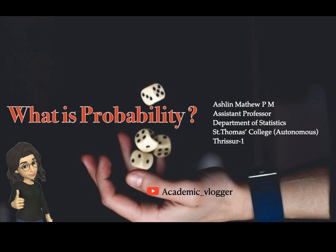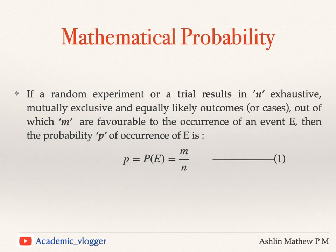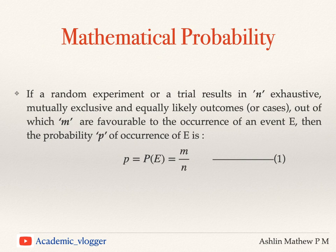First we have the classical definition of probability, or the mathematical definition of probability. If a random experiment or trial results in n outcomes, and those n outcomes have some unique features — that is, they are exhaustive, mutually exclusive, and equally likely — and out of which m are favorable to the occurrence of an event E, then the probability of occurrence of event E is given by m divided by n, as given in equation number 1.